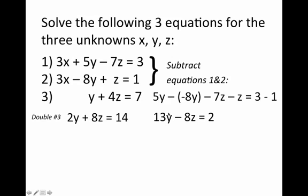Then if you notice these two equations right here, they have an 8z in each of them, but they have different signs. So if we were to add those two equations, 13y minus 8z equals 2, to the previous equation 2y plus 8z equals 14...